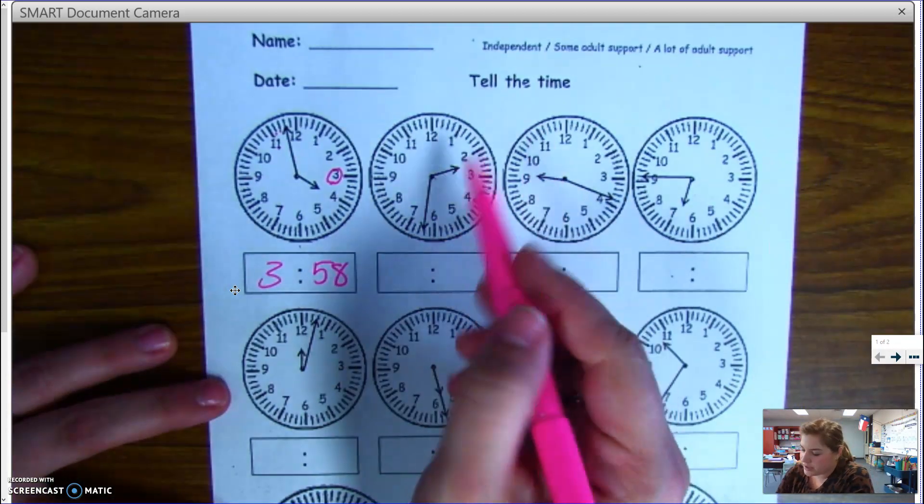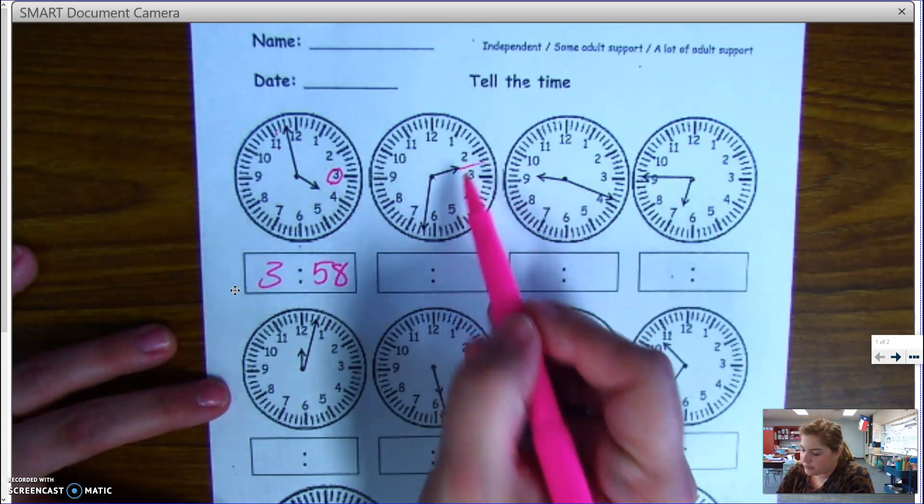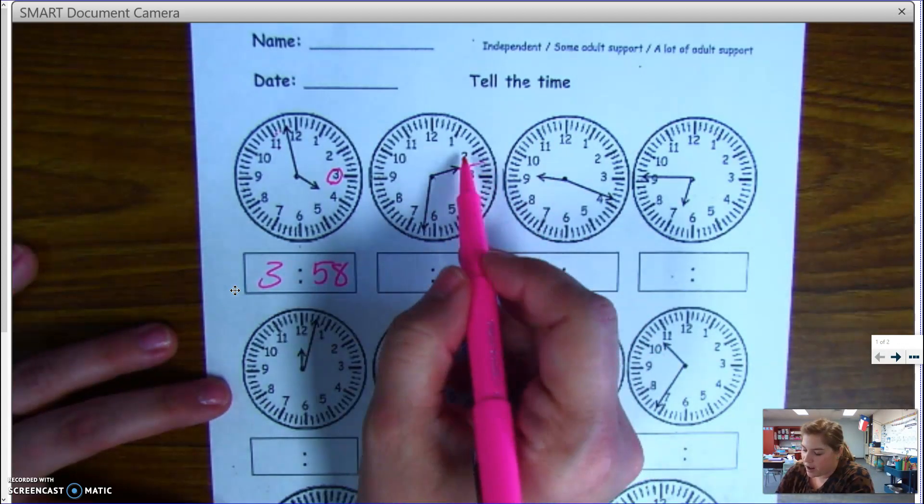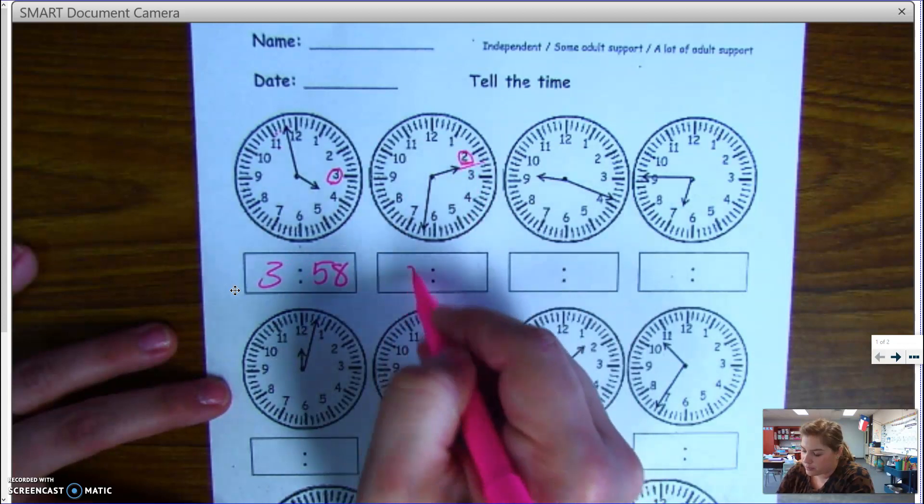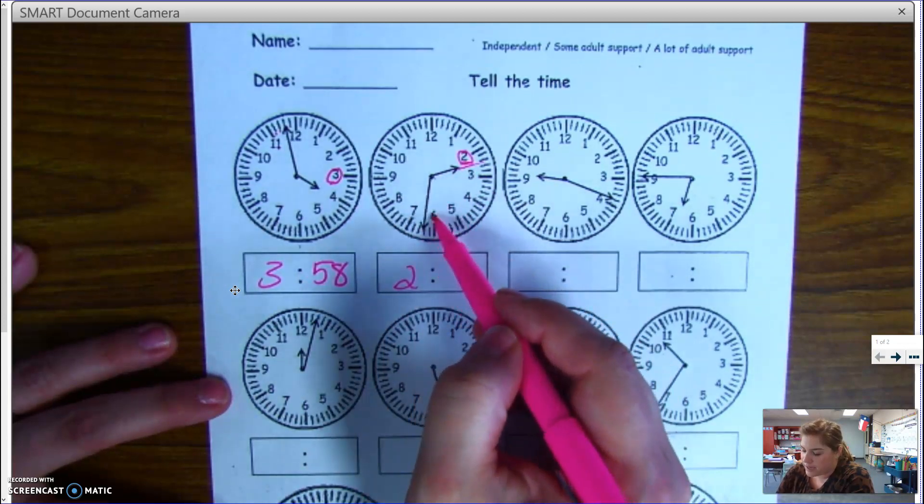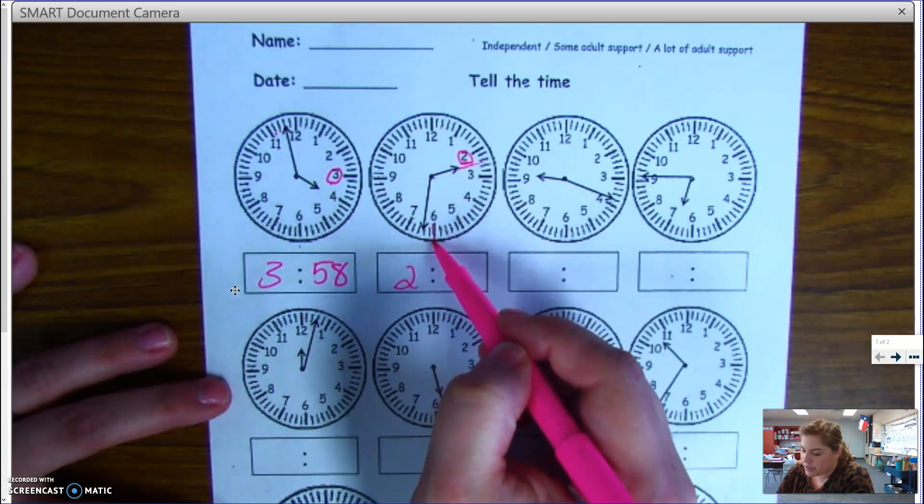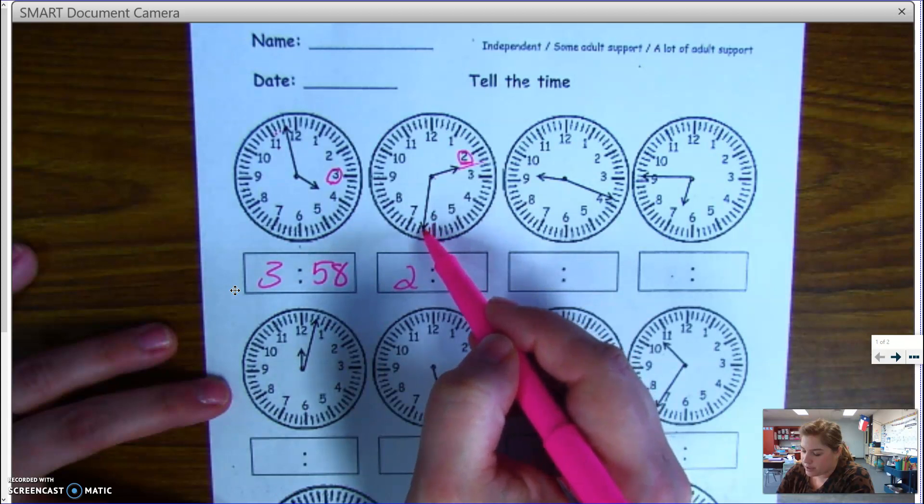I look at this next one. My hour hand is between two and three. So the hour is two. And my minute hand, six is at thirty minutes. So thirty-one, thirty-two.